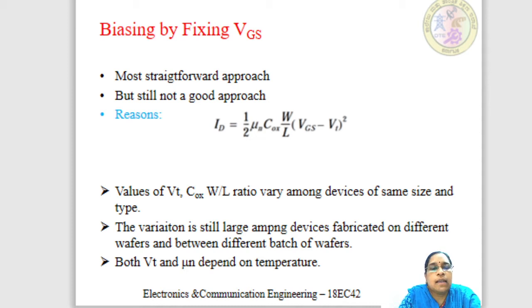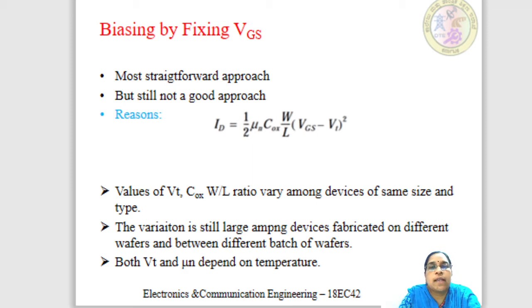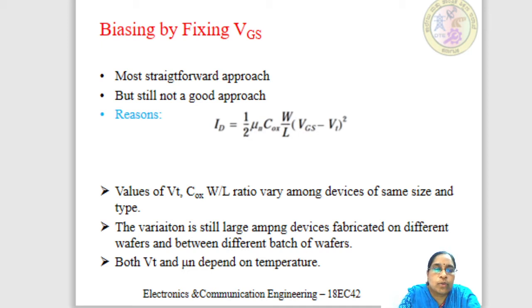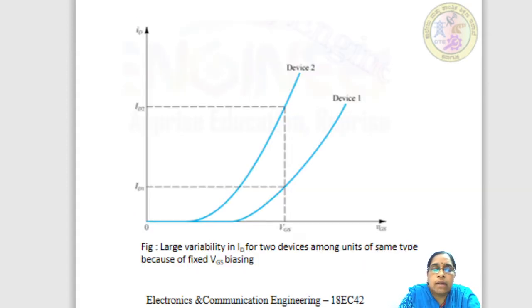This variation is still large for devices fabricated on different wafers, and even more between different batches of wafers. Additionally, both threshold voltage and mobility factor also depend on temperature. Due to these reasons, biasing directly by fixing VGS itself is not considered a good method of biasing. A graphical plot shows a lot of variation in drain current values whenever the devices are changed.